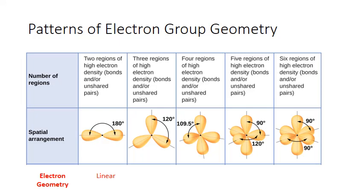Now if there were three electron groups attached to that central atom, those groups would push themselves apart until they were 120 degrees, and this geometry is called trigonal planar.